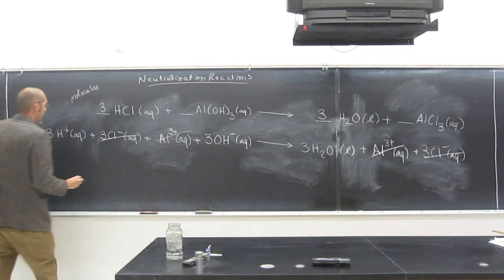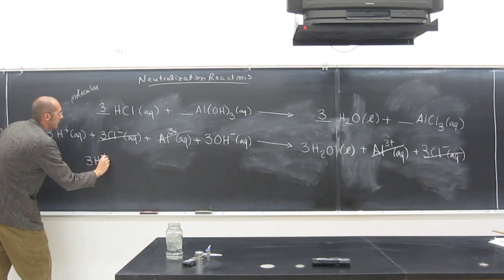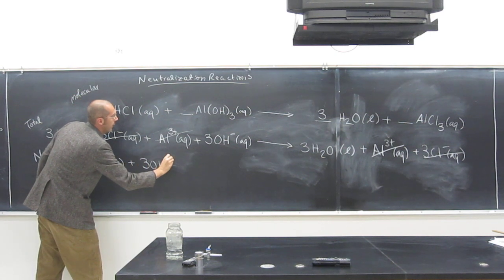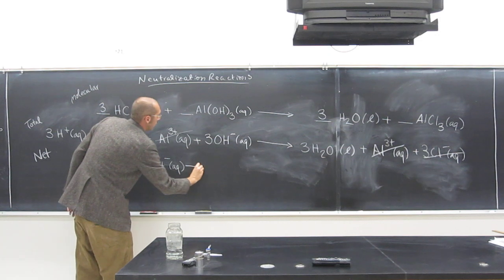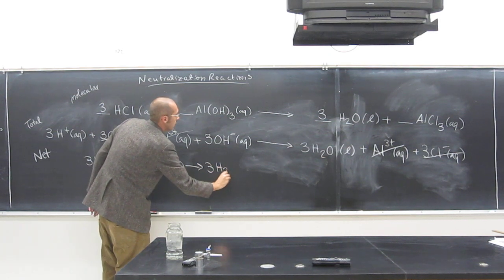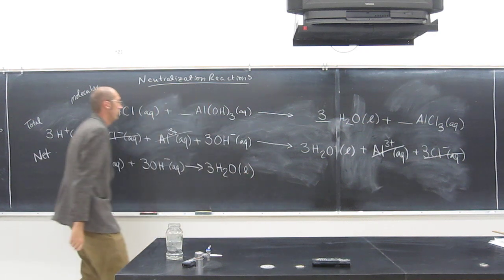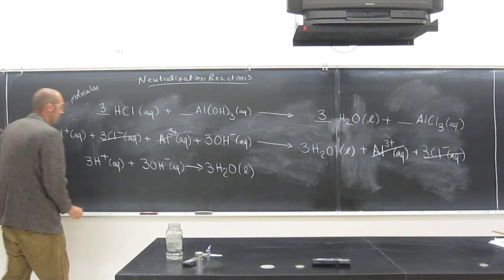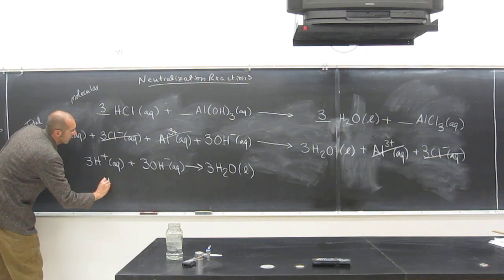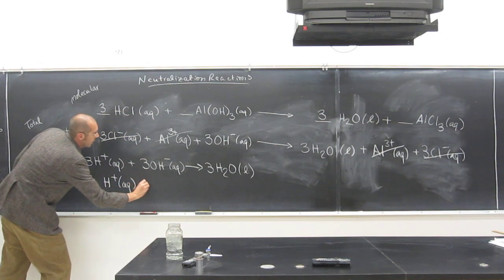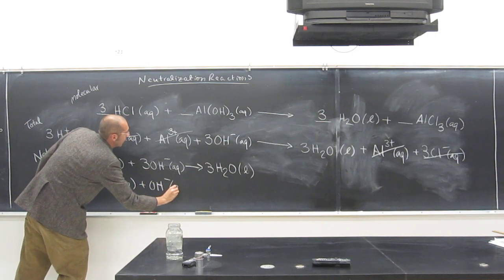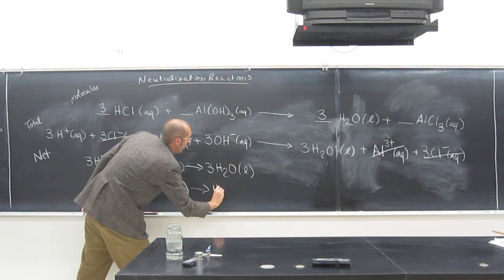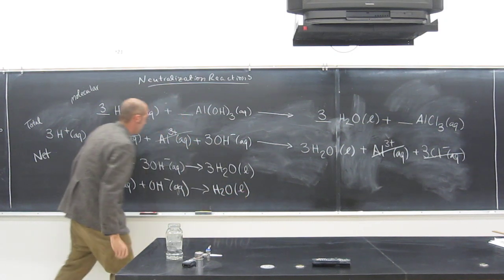So the net: 3 H+ aqueous plus 3 OH minus aqueous goes to 3 H2O liquid. But 3, 3, 3, we're going to reduce that coefficient to 1, 1, 1. So the net ionic equation is H+ aqueous plus OH minus aqueous goes to H2O liquid.